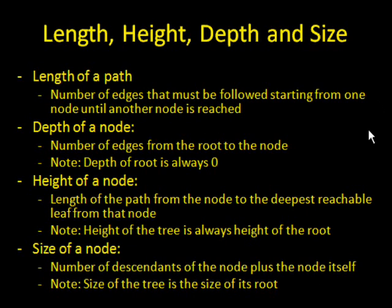Now, if you are talking about the length of a path of the tree, that's the number of edges that must be followed starting from one node to the last node until that node is reached. The depth of a node is considered to be the number of edges that the root is away from a node. Note that the depth of the root, that is the node at the very top, is always zero. The height of the node is the length of the path from the node to the deepest reachable leaf from that node. Note that the height of the tree is always the height of the root, that the two heights are identical.